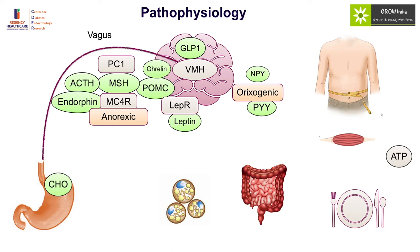In an energy-replete state, the body produces more leptin, which acts on the ventromedial hypothalamus at the leptin receptor to cause increased production of POMC, which is then converted into MSH, causing anorexia through the MC4 receptor. Any abnormality in this anorexic pathway is expectedly associated with hyperphagia — an uncontrollable urge to eat — along with pathological obesity presenting at an early age.